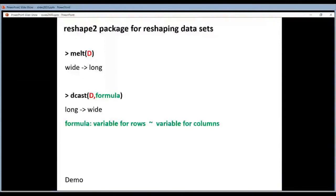So how do they work? Melt is really easy. You just give it the data frame and it will do the transformation. That's it. For dcast it's a bit harder. You give it a data frame in long format and you have to give it a formula. And what does this formula look like? Well,